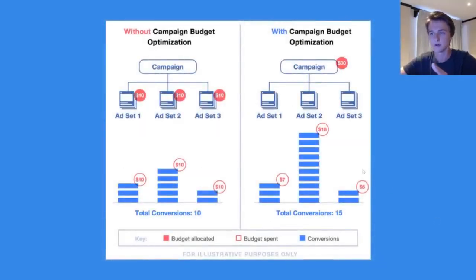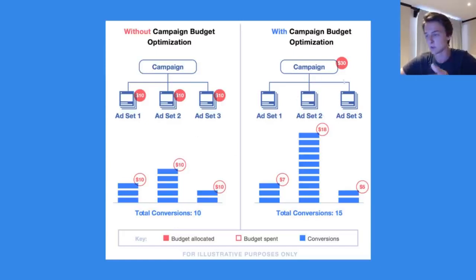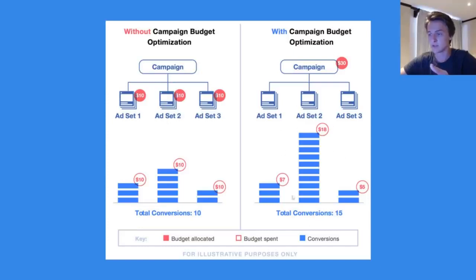This picture I pulled from Facebook does a great job at explaining it. On the left, without CBO, the budget is set for each individual ad set regardless of performance — so in this example you'd get 10 conversions even though ad set number two was performing better. If you turn on CBO with the same ad sets, Facebook would spend much more on ad set two when it saw that it was getting more purchases.